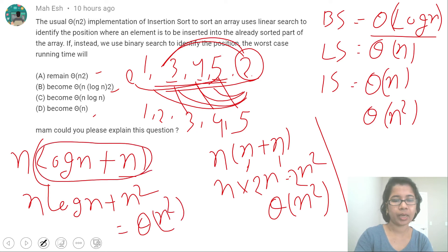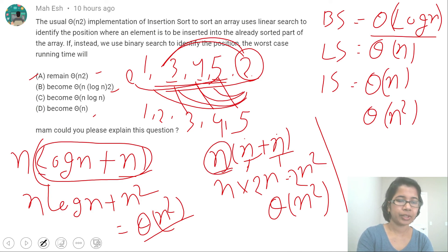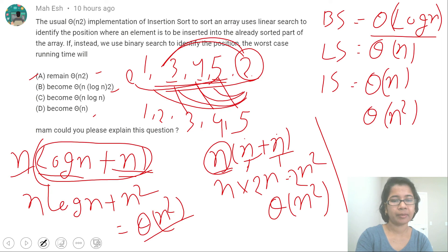So for n elements, the running time is theta(n²). The answer will be (a): theta(n²). To summarize — in case of linear search: searching takes n, shifting takes n, so (n + n) × n = theta(n²). In case of binary search: searching takes log n, shifting takes n, and doing this for n elements gives n × (log n + n) = theta(n²). So the answer is theta(n²).